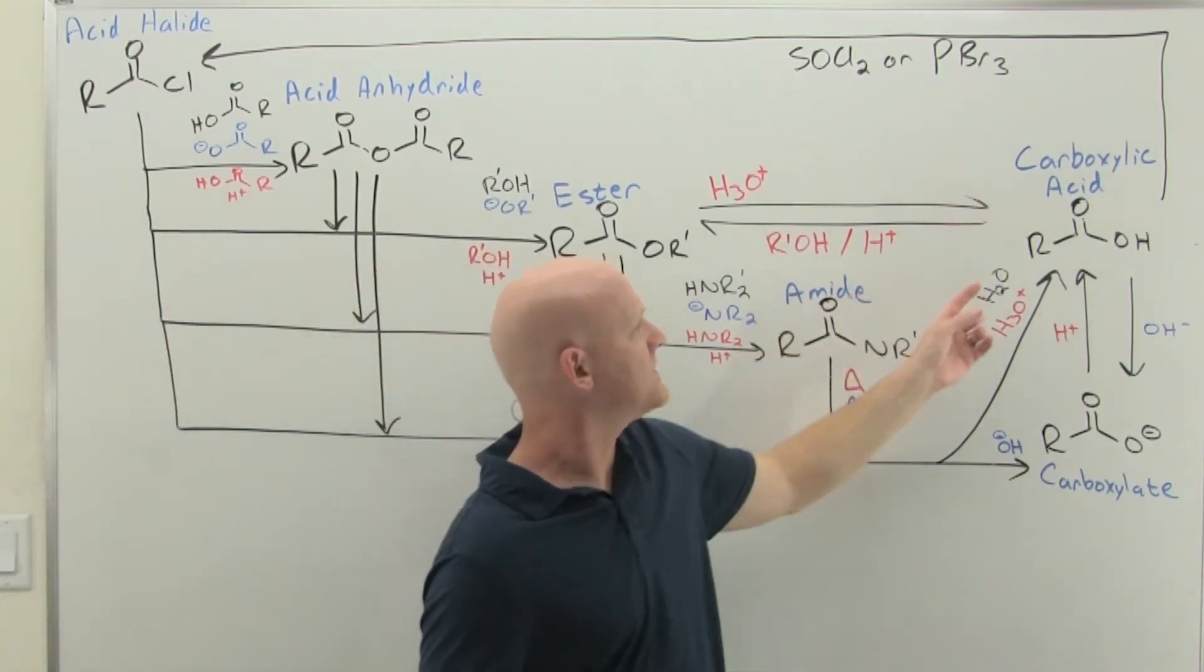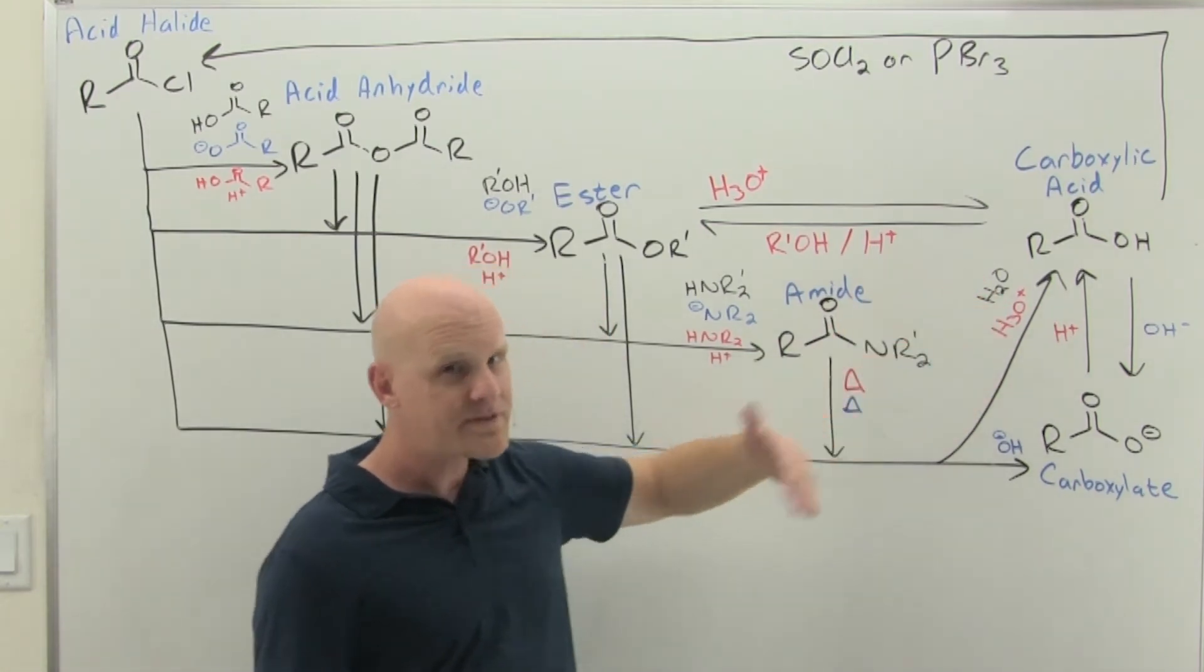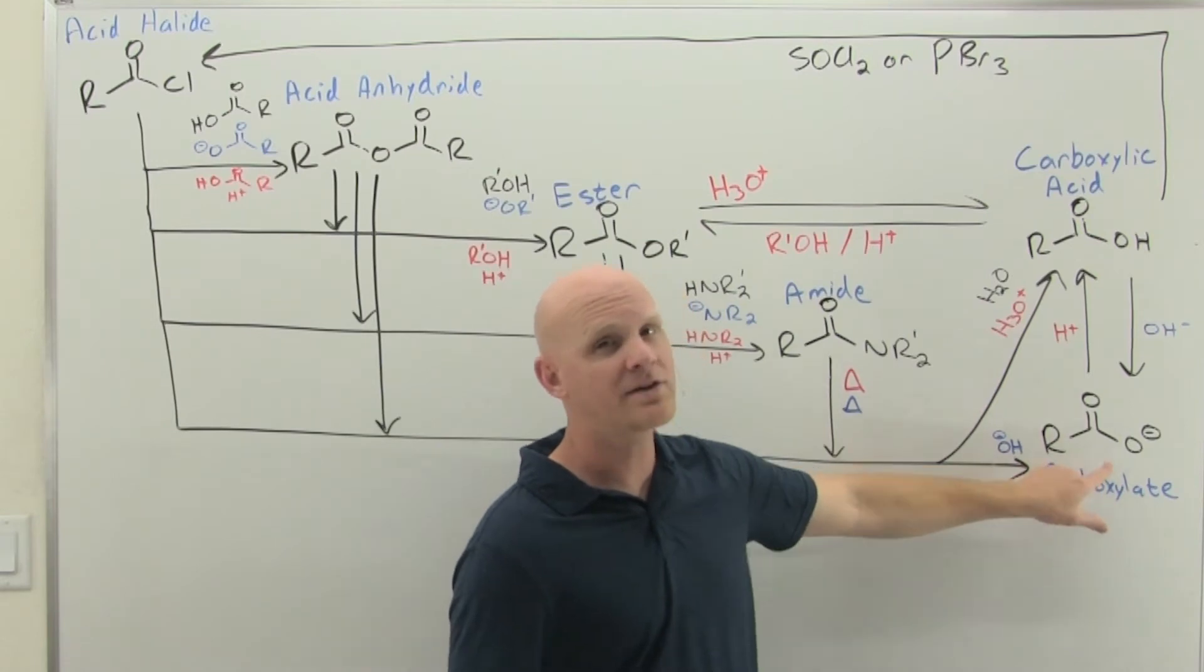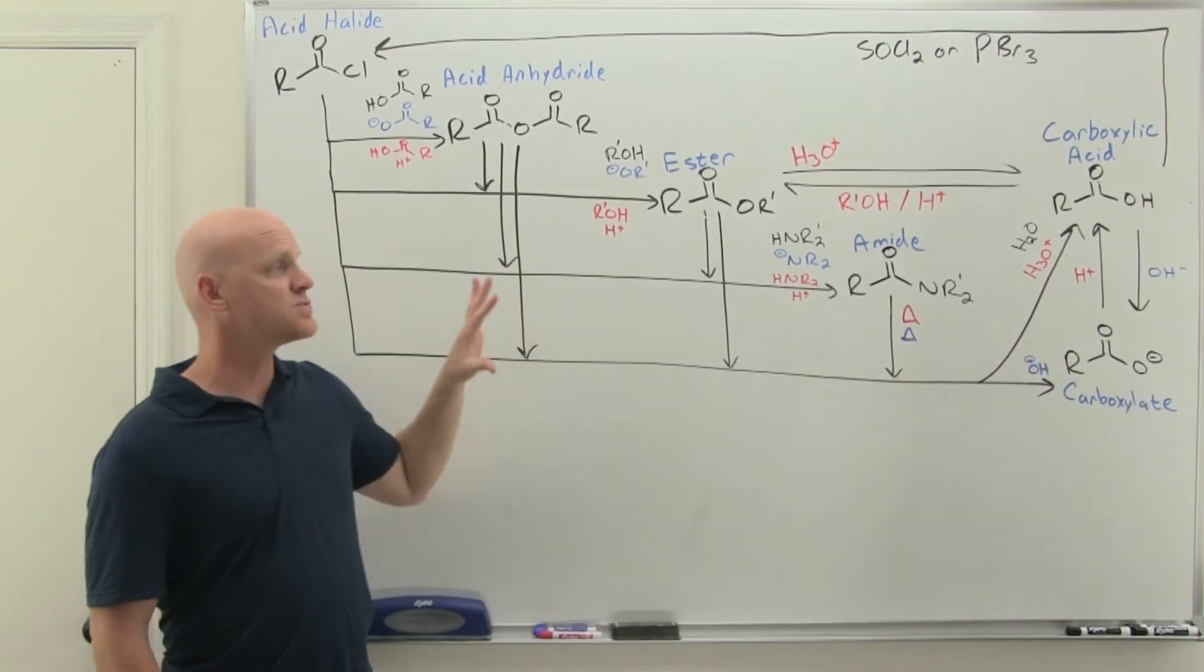Finally, you can make the carboxylic acid with water uncatalyzed, technically acid catalyzed would get you there but you're probably not going to see it, and then finally you can use hydroxide to form the carboxylate, just like we saw with the acyl chloride.